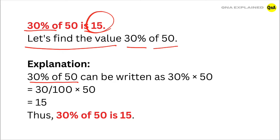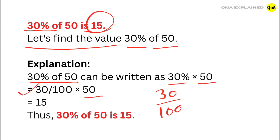30% of 50 can be written as 30% multiplied by 50. 30% is written as 30 upon 100, so we have 30 upon 100 multiplied by 50.